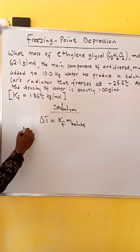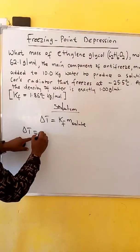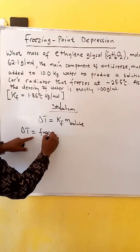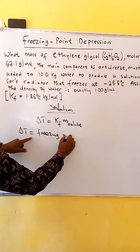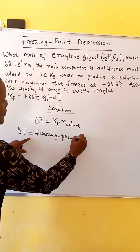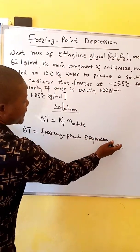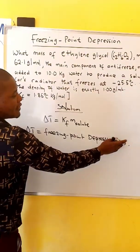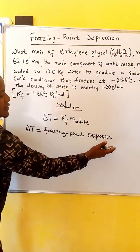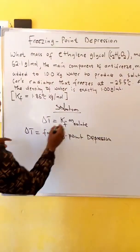Where delta T is the freezing point depression, or the difference between the freezing point of the solvent and that of the solution.